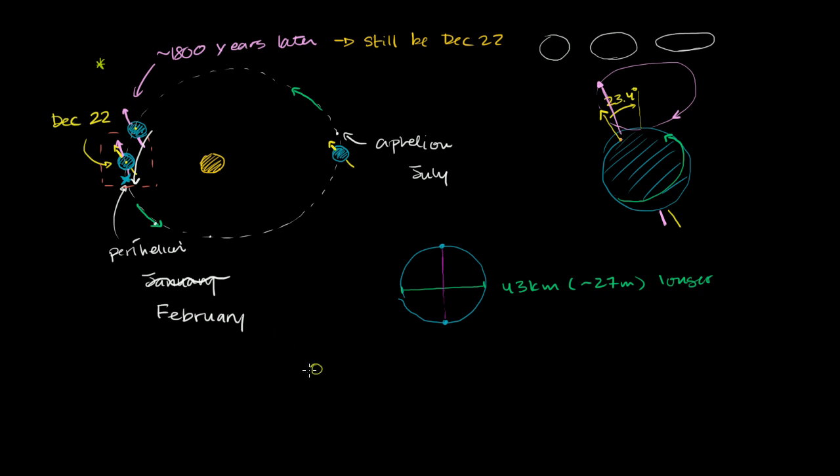What I want to add is that the perihelion itself is also changing. So if I draw the sun again, and maybe right now our orbit looks something like this, I'm going to exaggerate the eccentricity of it, just so that the perihelion and the aphelion are a little bit clearer. So right now this is the perihelion, this is the aphelion. There is also a rotation of the perihelion.